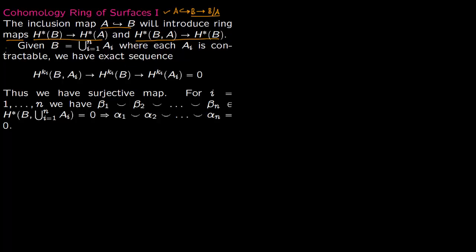For the first example, say there is a space B covered by sets A_i, where each A_i is contractible. Then you have a long exact sequence: H^k(B, A_i) → H^k(B) → H^k(A_i), constructed for each A_i. Since each A_i is contractible, it is homotopically equivalent to a point, so the cohomology groups H^k(A_i) become zero, giving a surjective map H^k(B, A_i) → H^k(B).